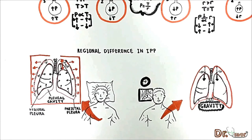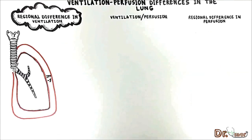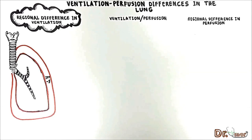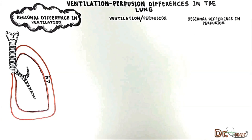In an upright standing person, the intrapleural pressure at the apex is negative 10 cm water, negative 5 in the middle, and negative 2.5 at the base of the lung. It is very important to note that alveolar size is dependent on intrapleural pressure. The more negative the intrapleural pressure, the larger the alveolus. The less negative the intrapleural pressure, the smaller the alveolus.